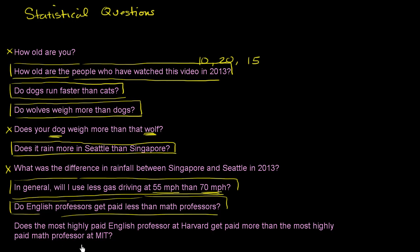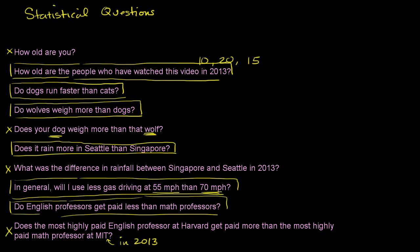Does the most highly paid English professor at Harvard get paid more than the most highly paid math professor at MIT? Now we're talking about two particular individuals. You could look at their tax forms and see how much each gets paid — especially in a particular year, say 2013. Then you have an absolute number for each person and can compare them directly. When we're talking about a particular year and particular people, this is not a statistical question.